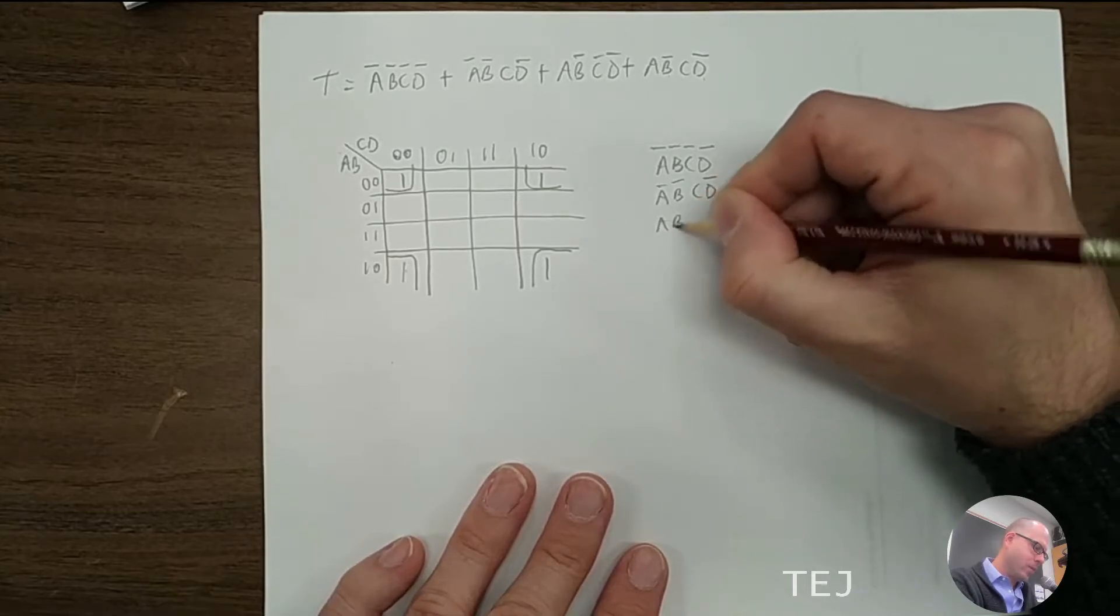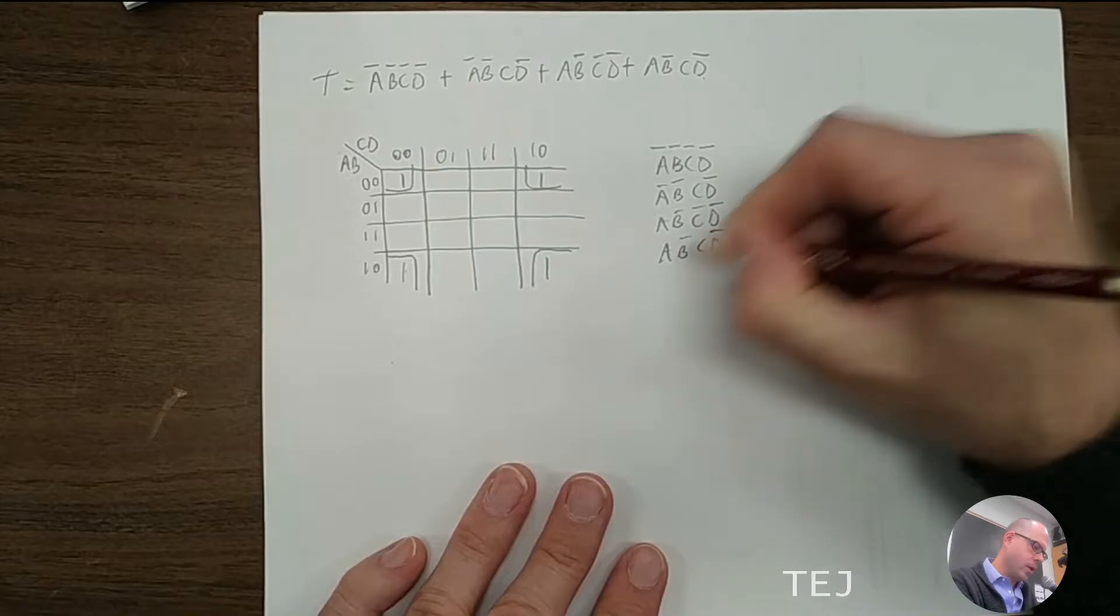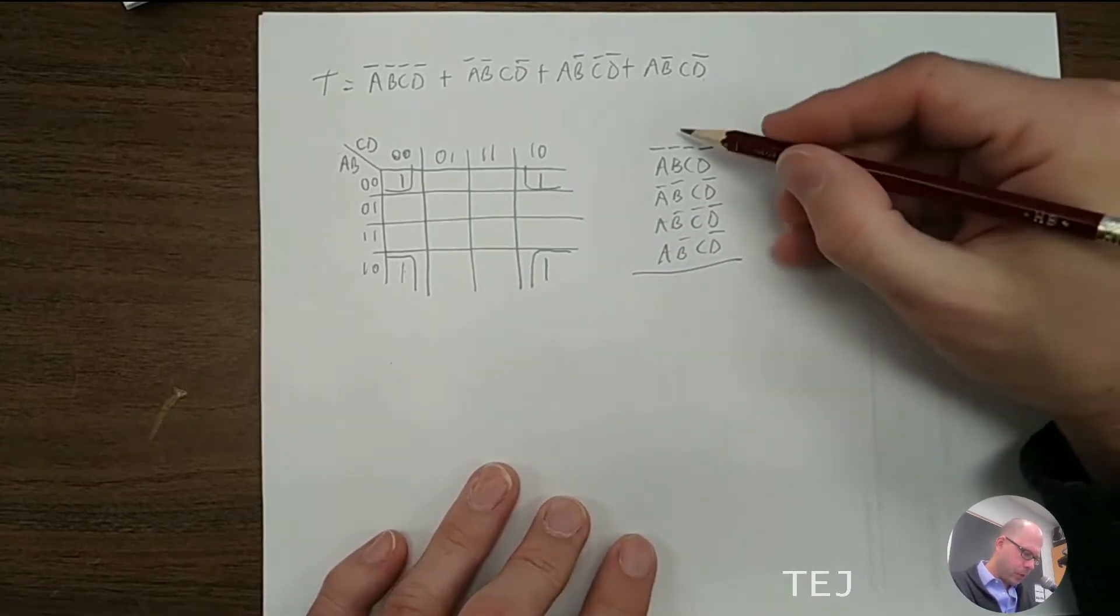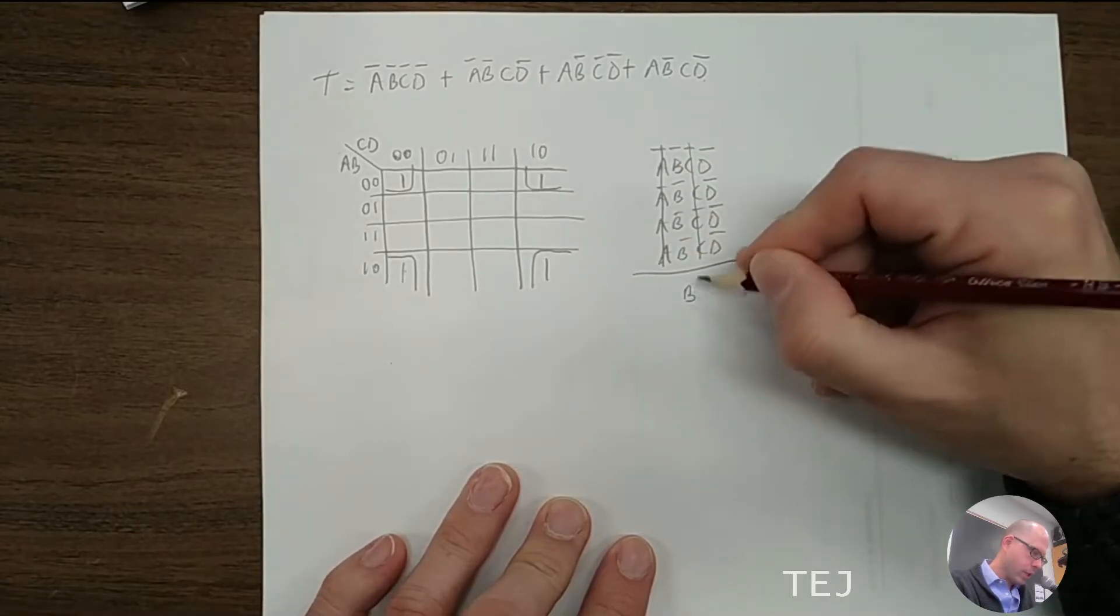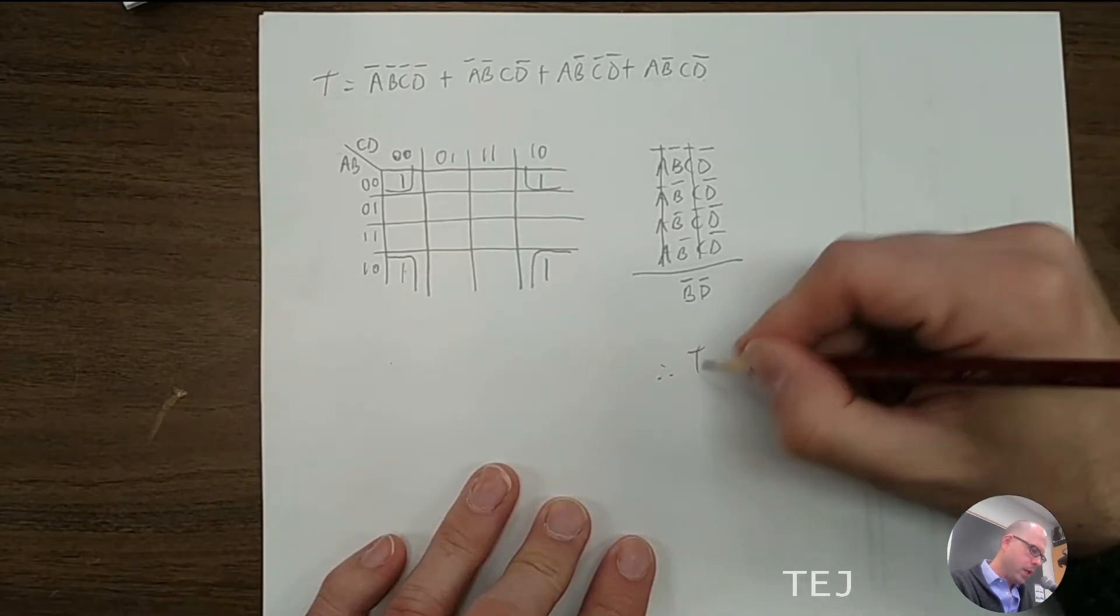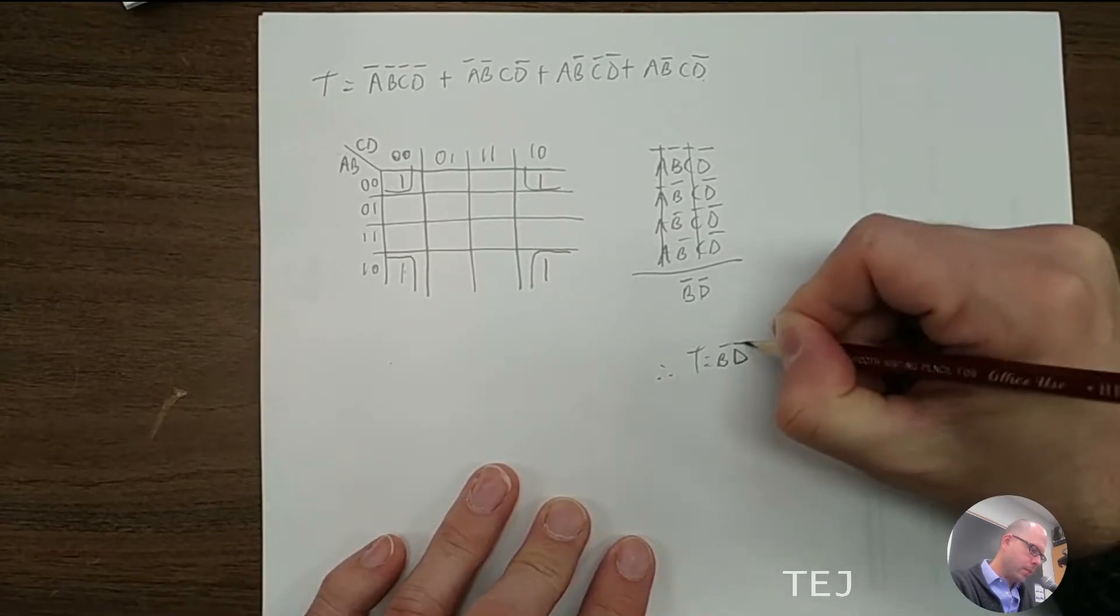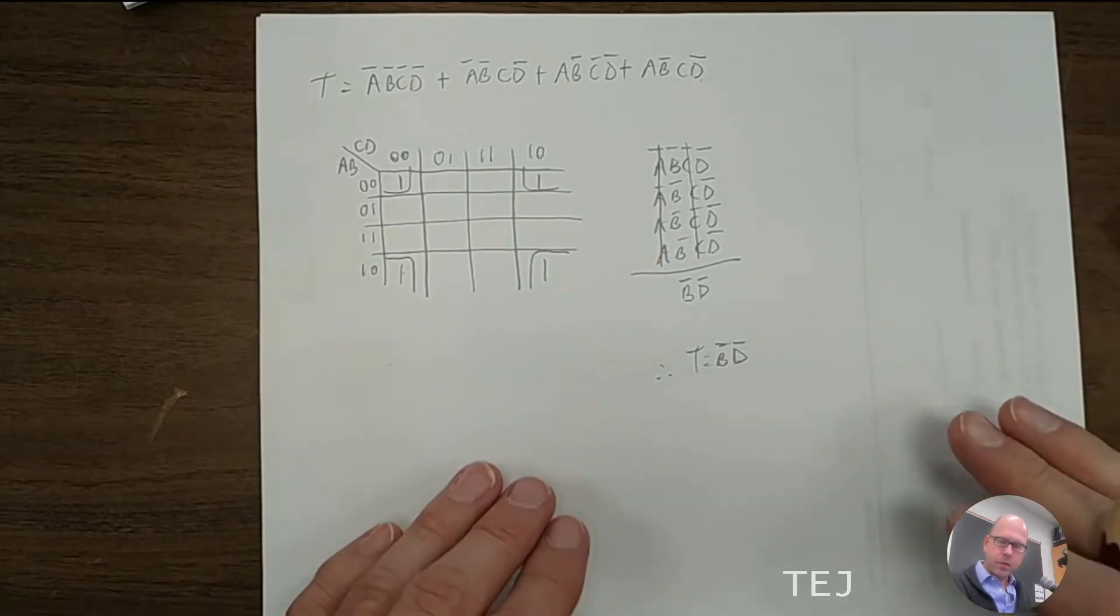So a, b naught, c naught, d naught, a, b naught, c, d naught. So it looks like the c and c naughts cancel, and the a's and the a naughts cancel. We're left with b naught and d naught. So therefore, t equals b naught, d naught. And that's the end of the first example.